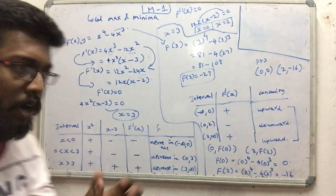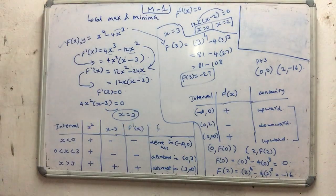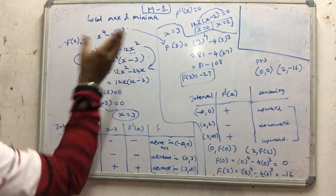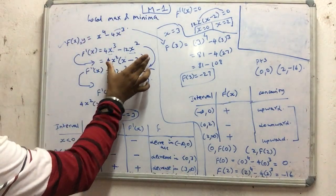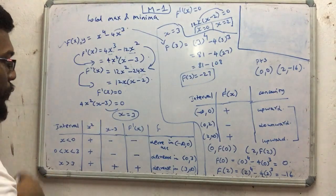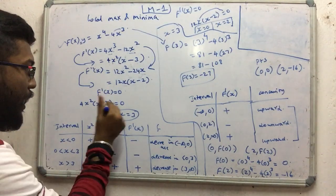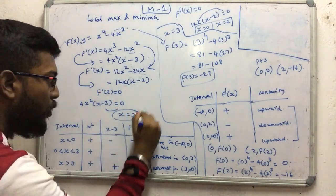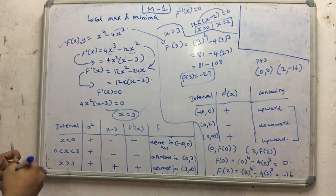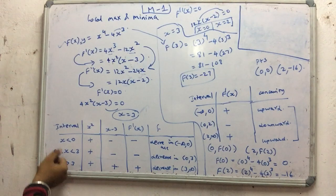Then we can get the value of 0. Now let's take a look at x. We will have zero to add x. Let's take a box. Let's go to the interval.